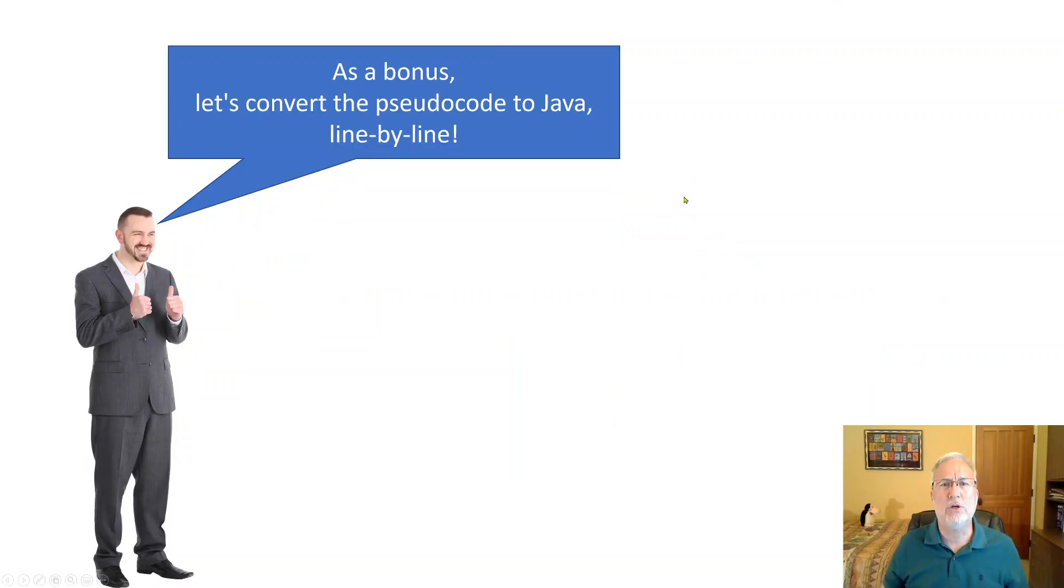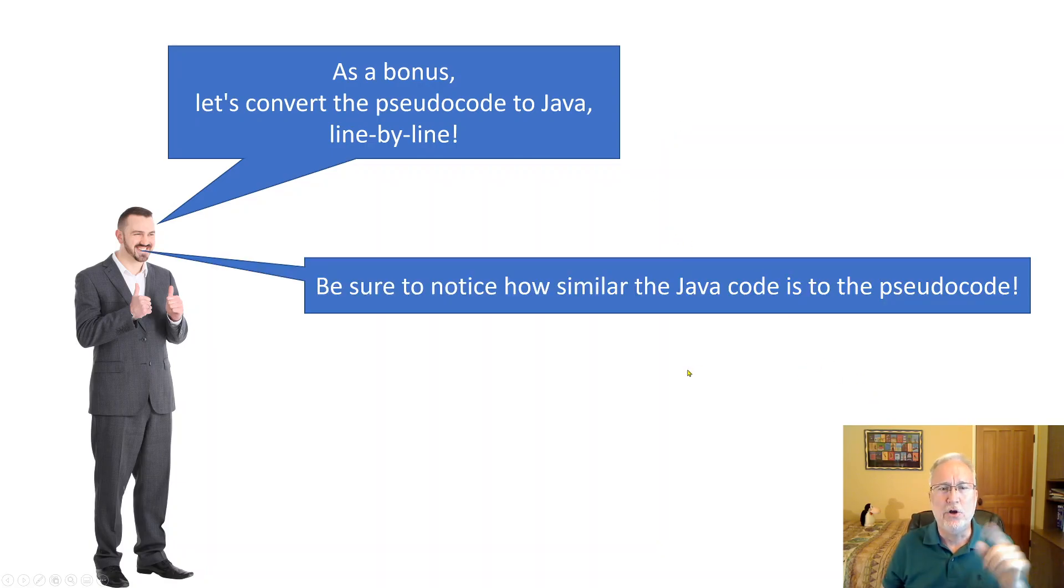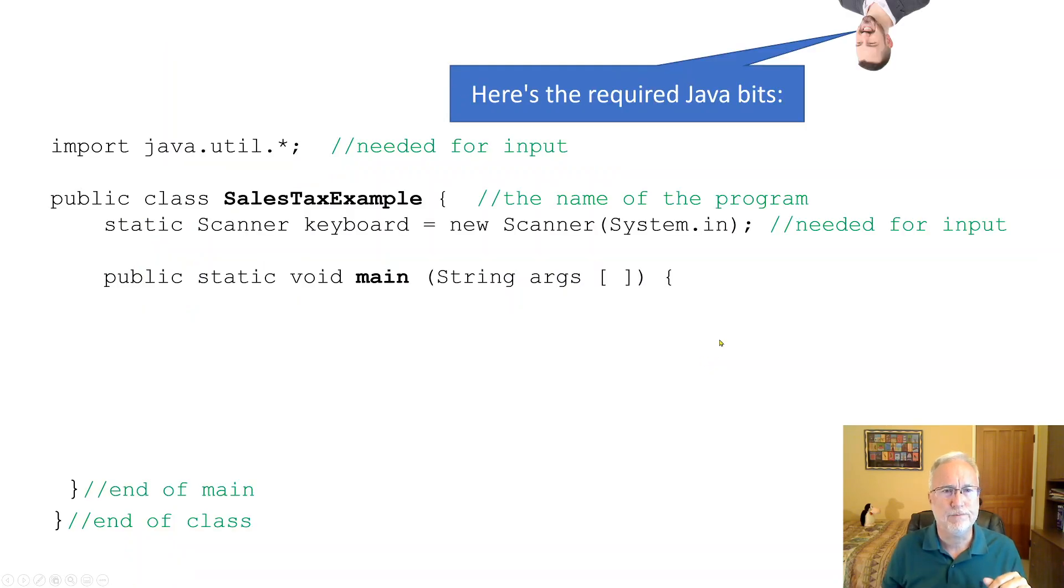Okay. So as a bonus, let's convert the pseudocode to Java line by line. This may be a little ahead of what we've done in class so far, but something you can come back to at a later time. Notice how similar the Java code is to the pseudocode. It's very similar.